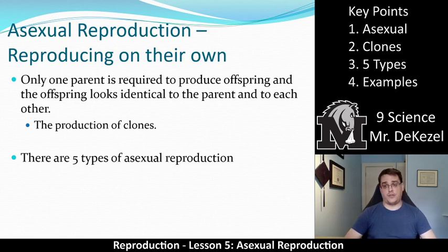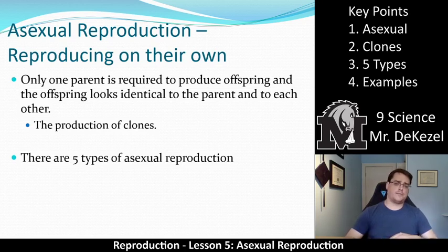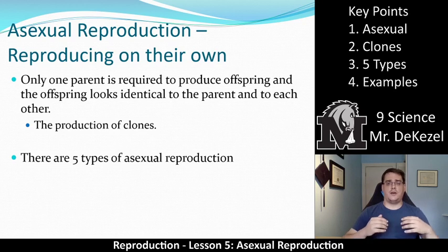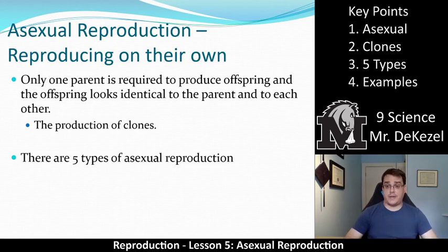There are actually five types and we're going to talk about those, as well as examples. You're also going to do some work to find out the benefits and drawbacks of this type of reproduction. This is not the type of reproduction that most animals or humans have — they have sexual reproduction, which involves two parents — but we're going to talk about asexual reproduction first. I'm not going to expect you to memorize all five types and all of the examples; I'll want you to know maybe a couple of them. An important part of this lesson is the work you'll do on the advantages and disadvantages of this type of reproduction.